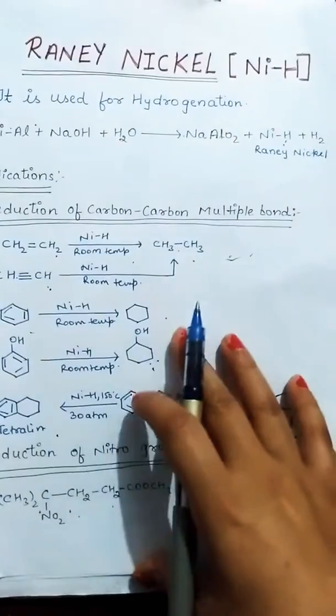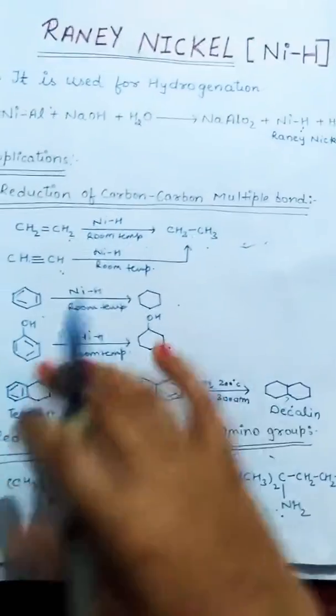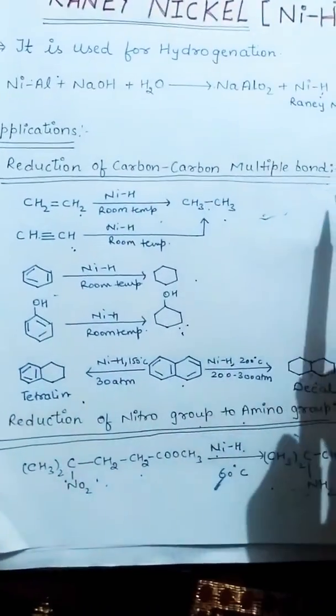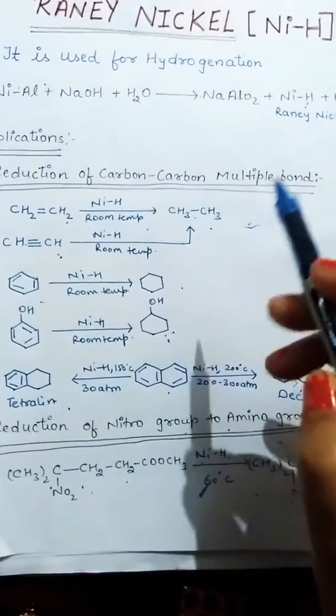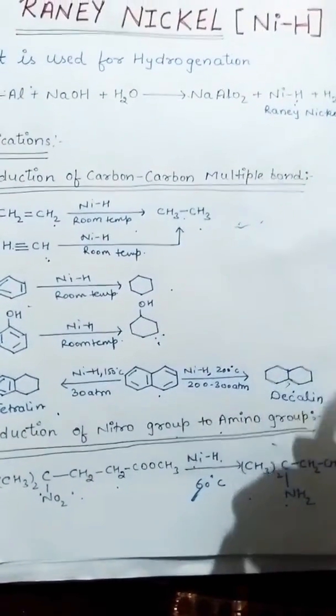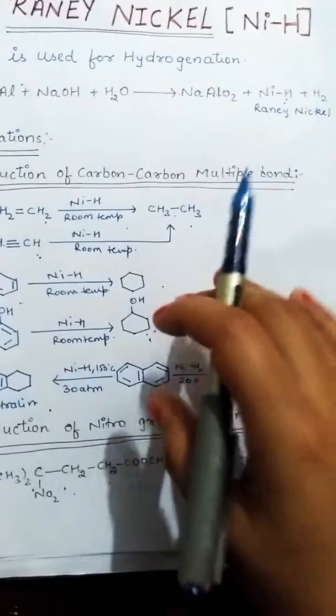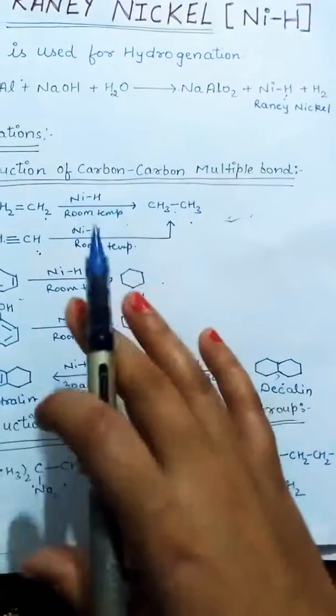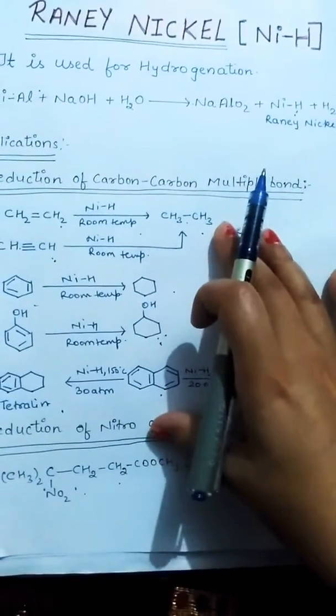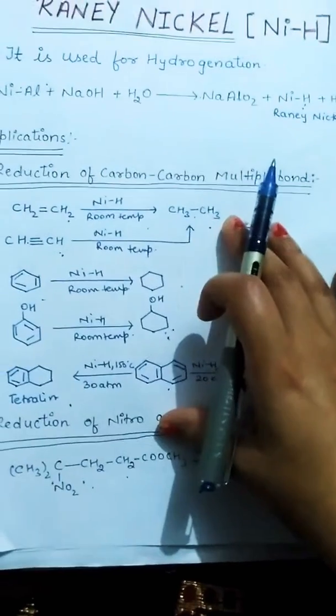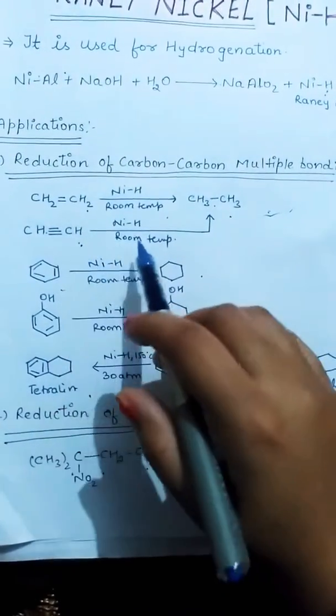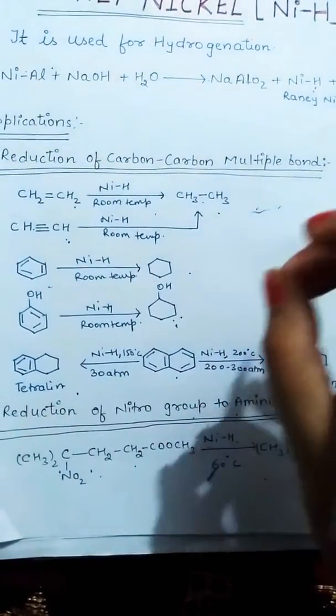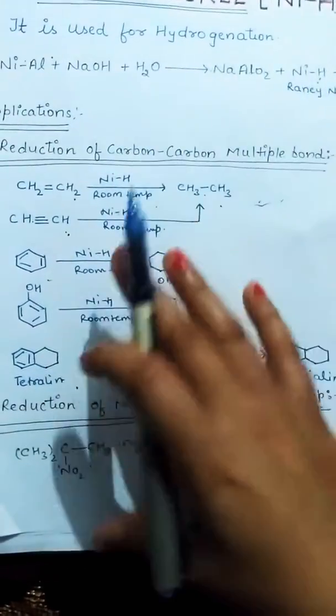There are many applications of Raney nickel. First is reduction of carbon-carbon multiple bonds. Raney nickel reduces multiple bonds present in aliphatic, alicyclic, and aromatic compounds. Ethene and ethyne change into ethane in the presence of Raney nickel at room temperature.